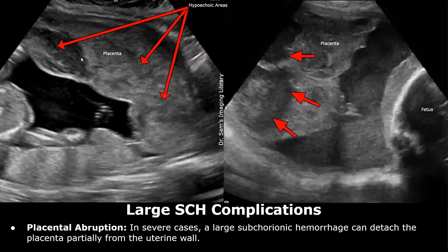The placenta will have hypoechoic areas. It is very irregular in shape and heterogeneous in appearance. There is a large hypoechoic and heterogeneous area in and behind the placenta indicating placental separation.